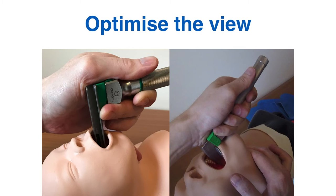If you're intubating neonates or small infants, you can use your little finger on your left hand to apply the pressure. Hold the laryngoscope with your other fingers but take your little finger away and apply the pressure over the larynx externally. This skips the step of needing somebody else to assist. This is harder to do in bigger patients - there's a bigger distance your finger needs to travel and you need much more pressure - so this technique is really just for neonates and small infants.